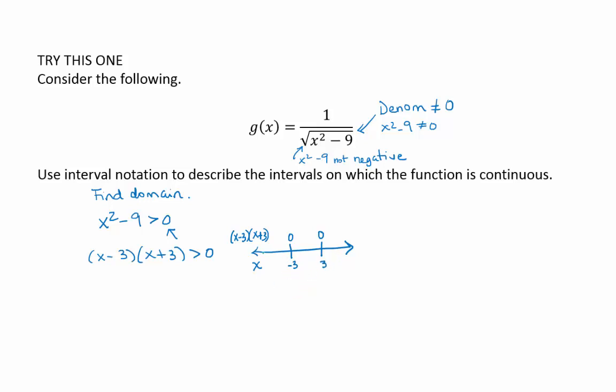On the interval from negative infinity to negative 3, for example, we could test the value negative 4 by plugging it into the expression and seeing if we get a positive or a negative. On the interval from negative 3 to 3, 0 is a nice easy number to plug in. On the interval from 3 to infinity, we could use 4, we could use 5, whatever. I'm just going to pick 5.